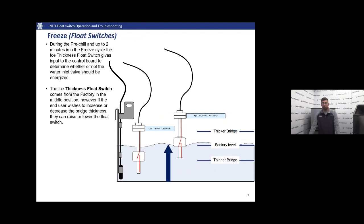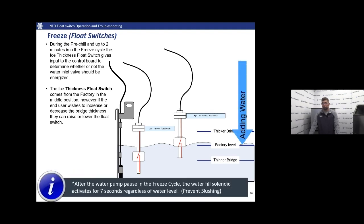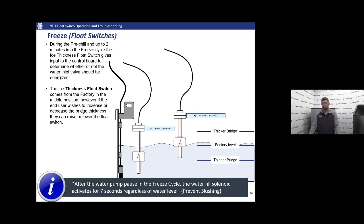The ice thickness float comes from the factory in the middle position — that's our standard setting. It's what we find will make a good thick sheet of ice with the proper eighth-inch bridge that we're used to seeing. The float can be raised or lowered depending on preference or the need in that area — one level up or down to thicken or thin out your ice. Note that you will see that water fill valve activate for seven seconds regardless of water level. That's to prevent slushing. Don't think that your float isn't working in those cases — it's part of the board.